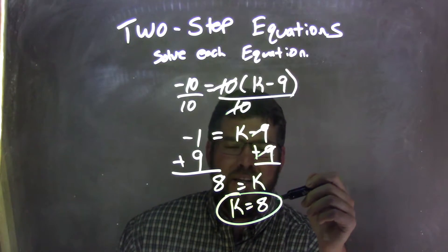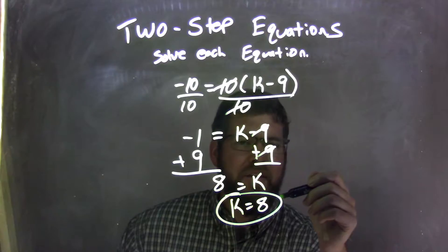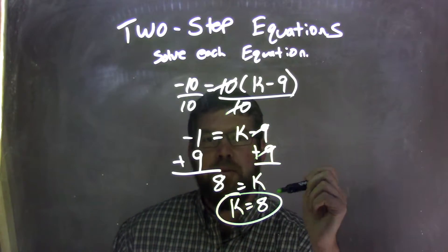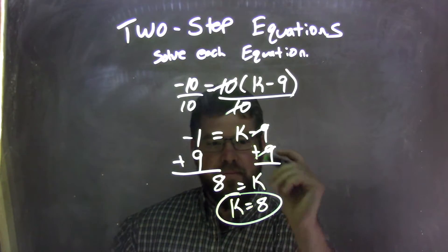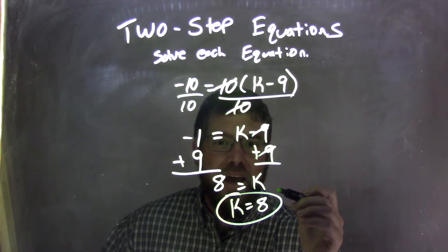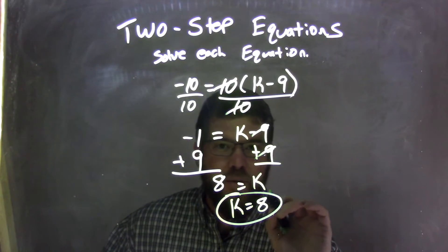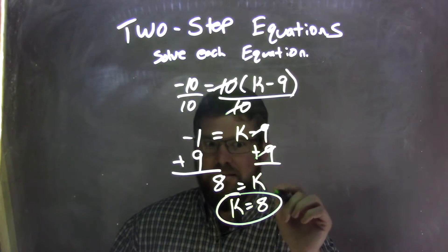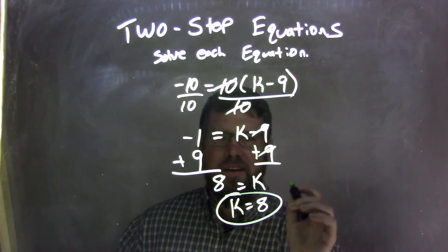And then at the end I just rearranged it to look nicer. So my final answer is k equals 8 — not 11. k equals 8. Sorry, I don't know why I said 11.